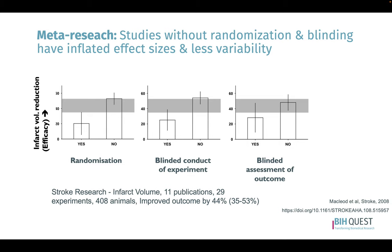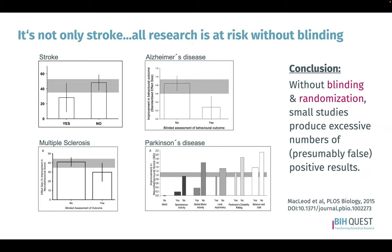You might be happy with such a result, say it's a great outcome, and move forward — but this could lead to new clinical studies that often fail. It could be that bias reduction methods were not applied in the pre-clinical testing. This is not true for stroke only — basically all research is at risk. Meta-researchers have shown this whether it's Alzheimer's, multiple sclerosis, or Parkinson's. Without blinding and randomization, small pre-clinical studies produce excessive numbers of presumably false positive results that shift our interpretation toward an effect even though there is none.